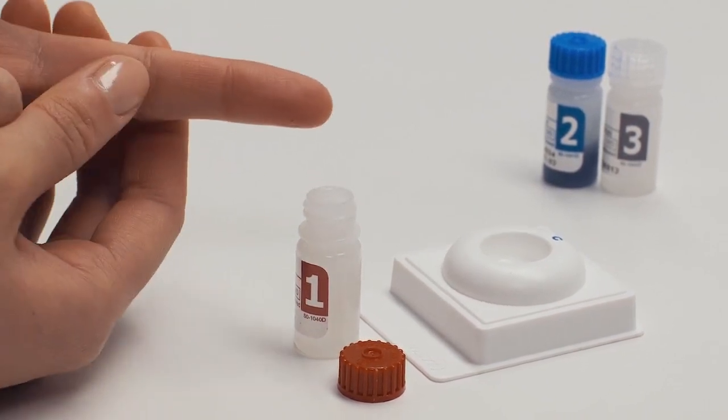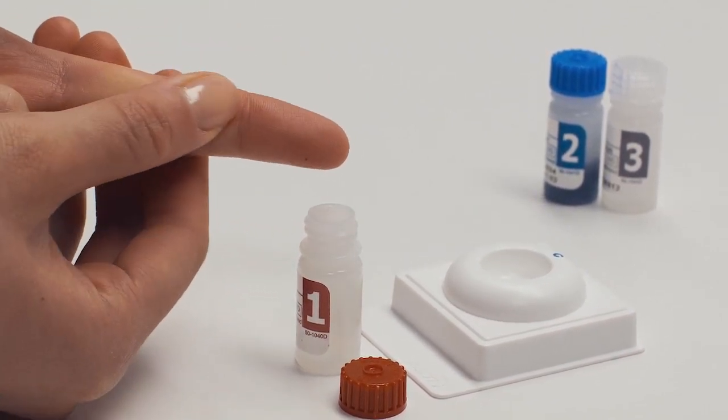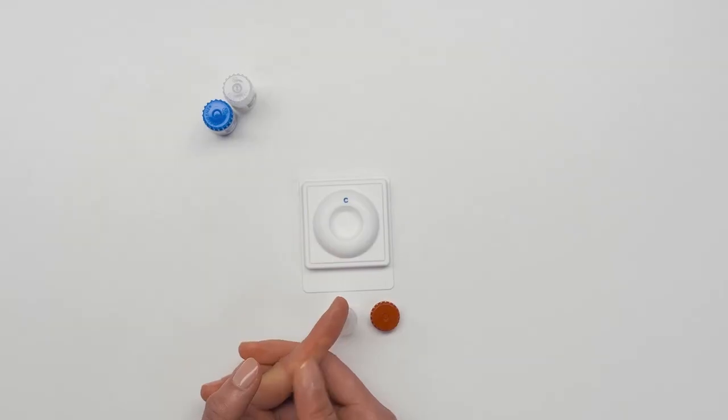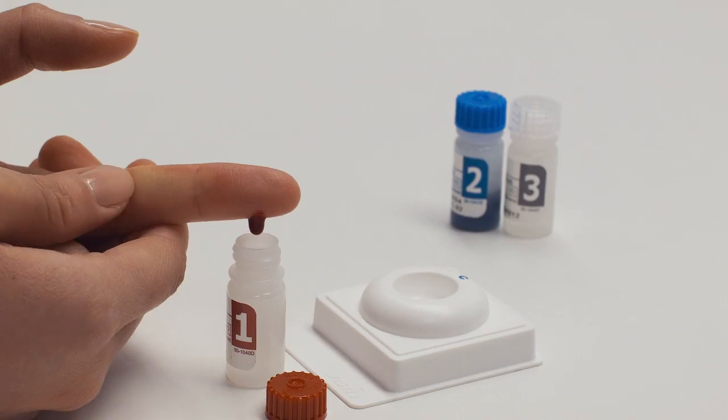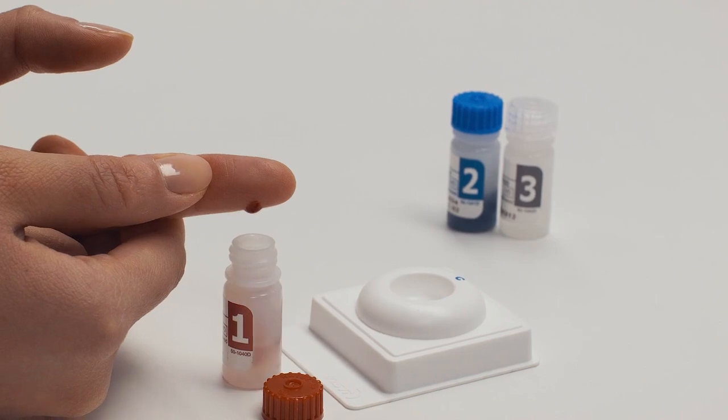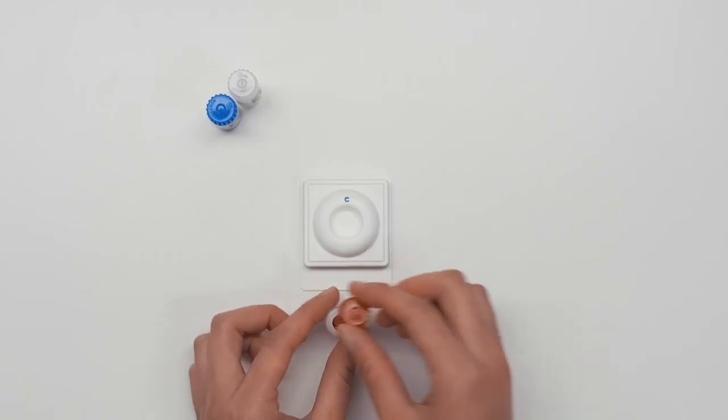Rub the finger to get a larger round drop of blood. Let one drop fall into bottle 1. Twist on cap of bottle 1. Apply a bandage.